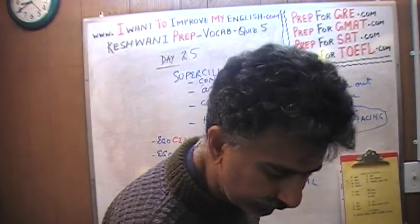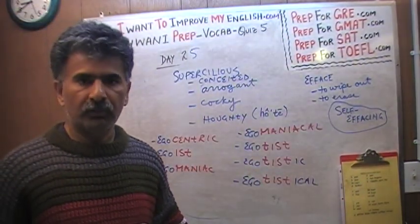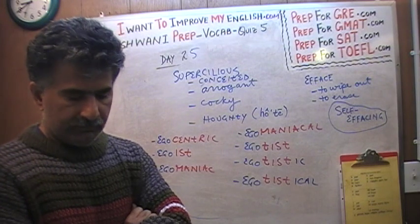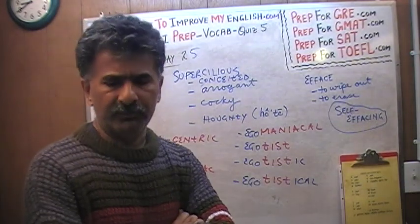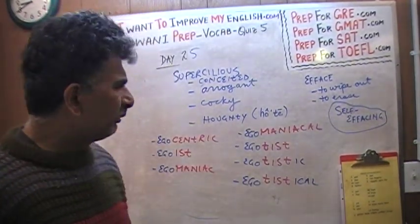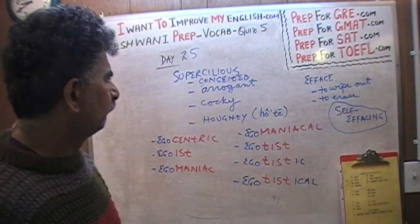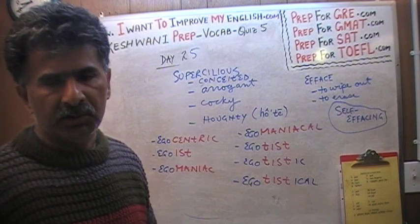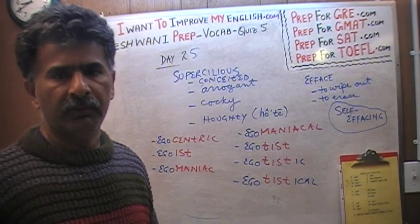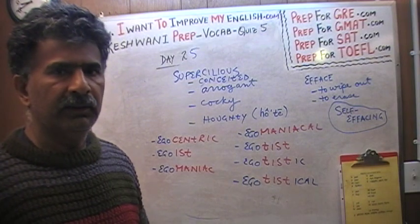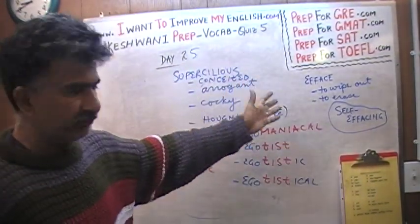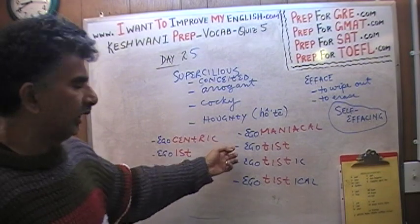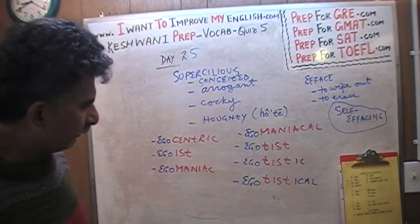If you're self-effacing, it means literally that you do not want to be conspicuous — you keep a very low profile, you come across as a very modest person, not arrogant at all. A very low-profile person is said to be self-effacing, which is a very different person than one described as supercilious, conceited, arrogant, cocky, haughty, egocentric, egoist, egomaniac, egomaniacal, egotist, egotistic, or egotistical.